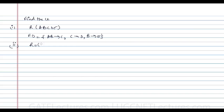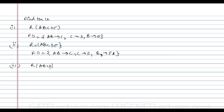The second question: relation R(A,B,C,D,E) with functional dependencies AB→C, C→D, B→E, and EA. The third question: relation R(A,B,C,D) with functional dependencies AB→CD and A→B. The fourth question involves relation R(A,B,C,D,E).